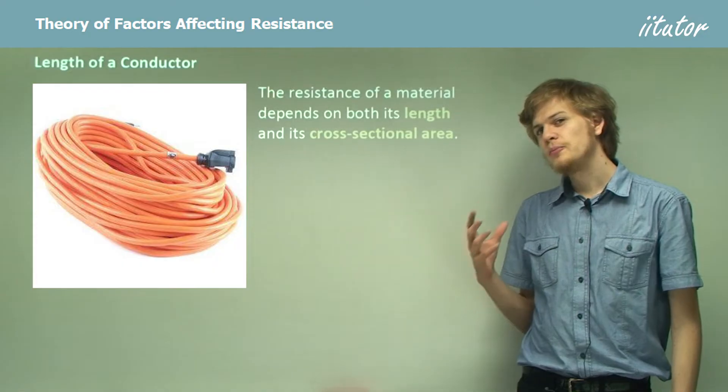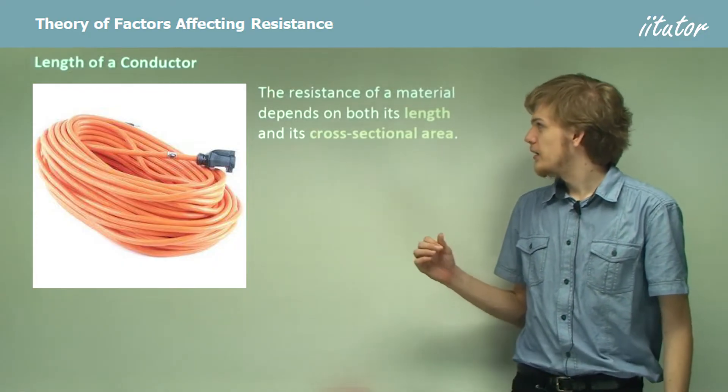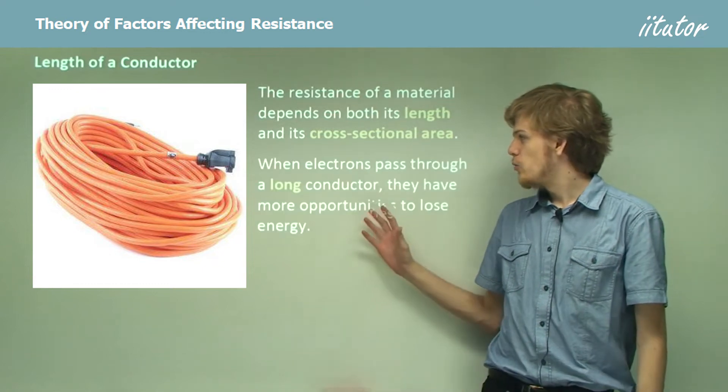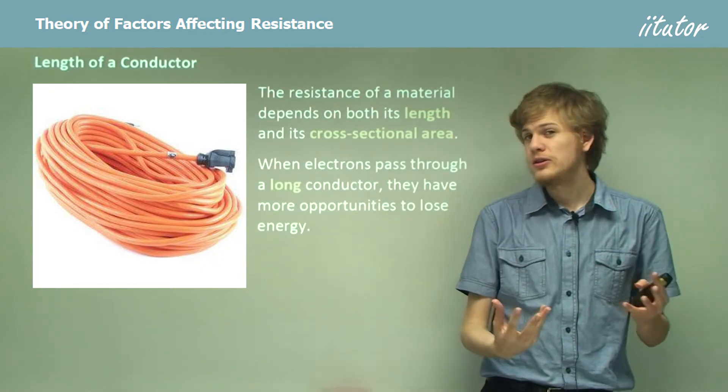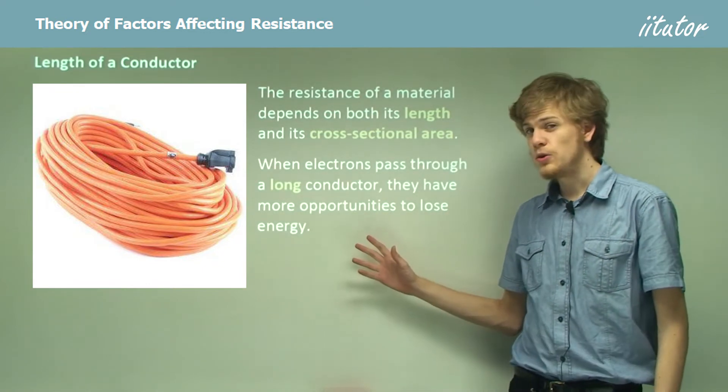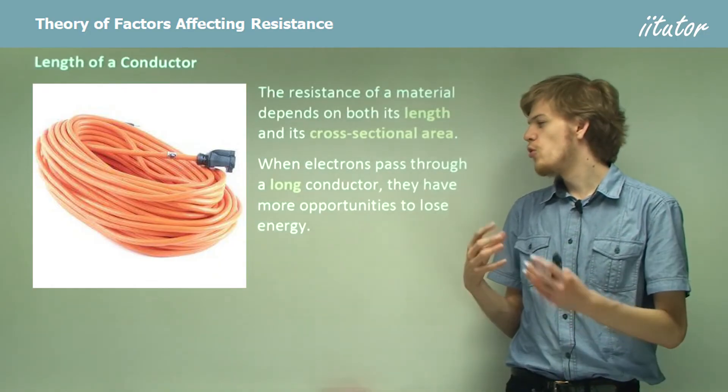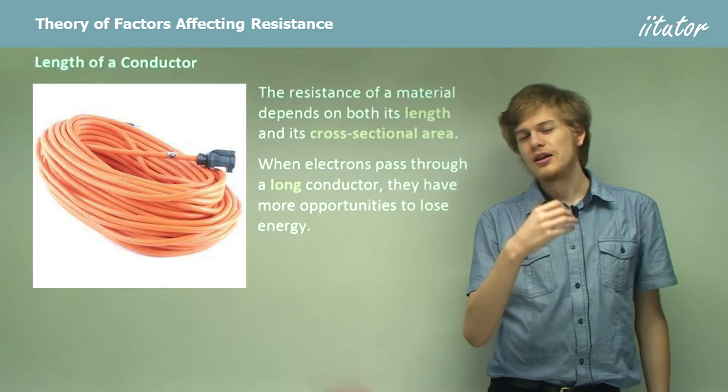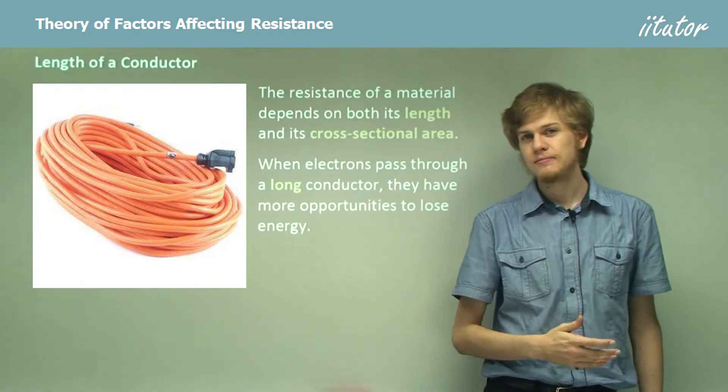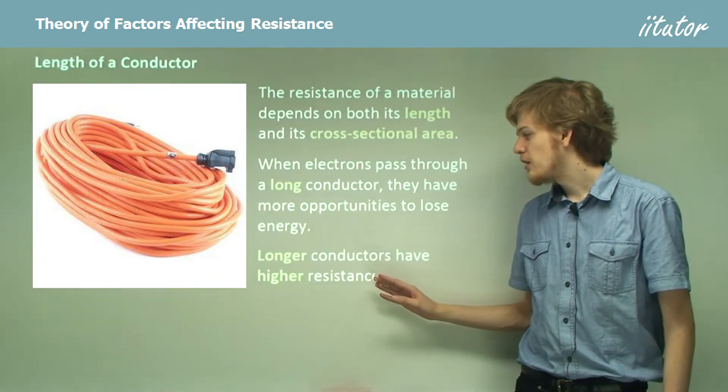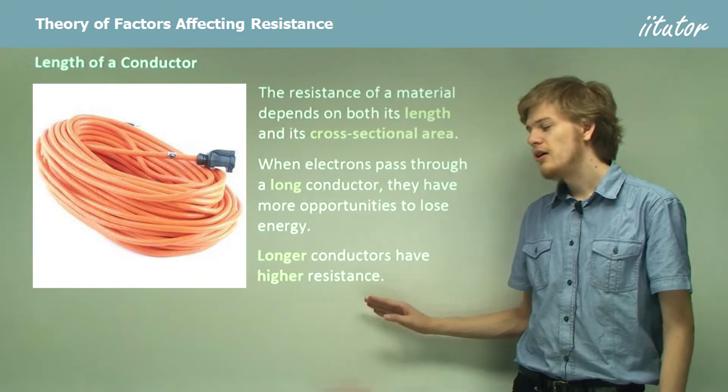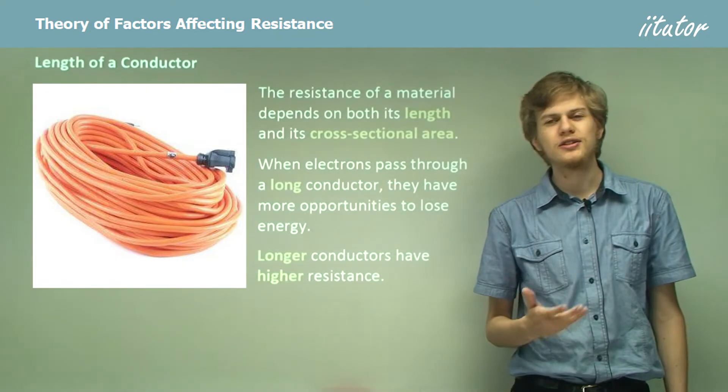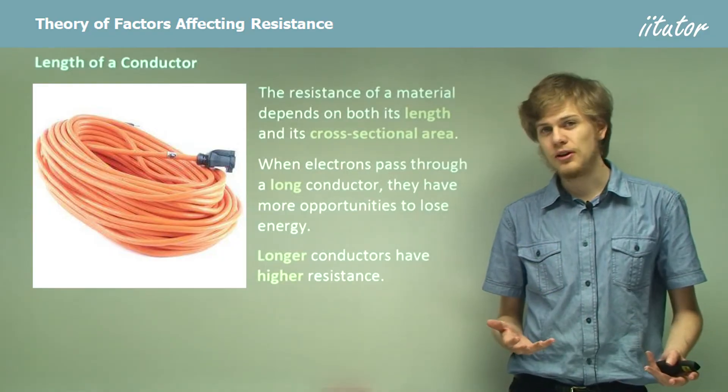The resistance of a metal depends on a few things. It'll depend on its length and its cross-sectional area. Now when electrons pass through a very long conductor, like a long extension cord, then they have more opportunities to lose energy. As they travel through the resistor, they can bump into more parts of the lattice. So this means that longer conductors have a higher resistance. The longer we draw out a wire, the more resistance it will have. That seems fairly straightforward.